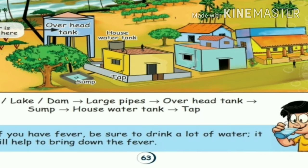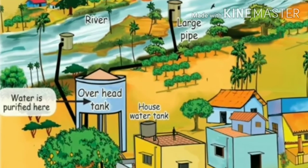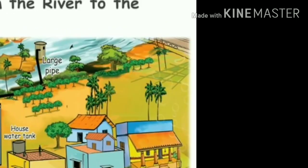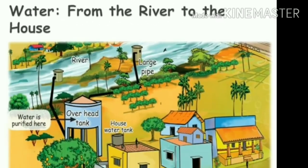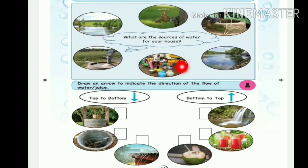Okay children, next — from the river to the house. Let us discuss: what is the source of water for your house? How many of you are using water? First: river, hand pump, tap — then you can use water.